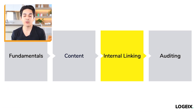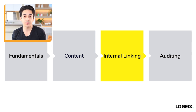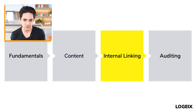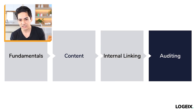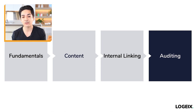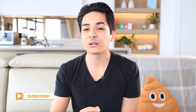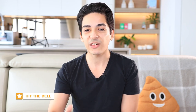That basically wraps up how to build internal links and what to look at when deciding where to build them. There's also an auditing phase for identifying broken links, links pointing to redirects, and more — we'll cover that in the next video, which covers auditing, content auditing, and fundamentals auditing using Screaming Frog. If you're interested, subscribe to the channel to get notified when the next video comes out, and please tap the like button below.